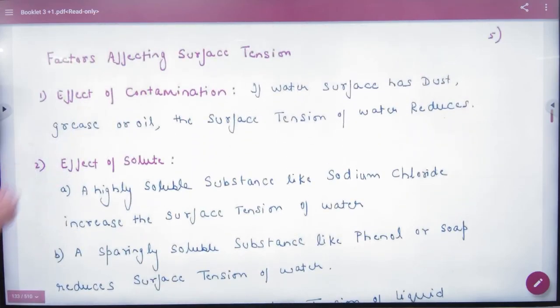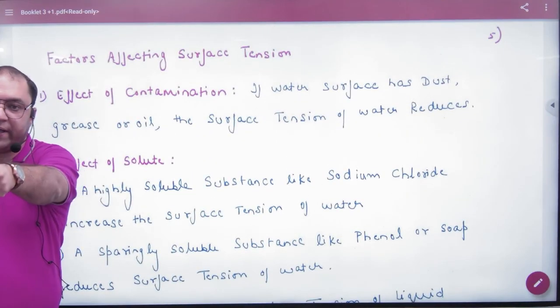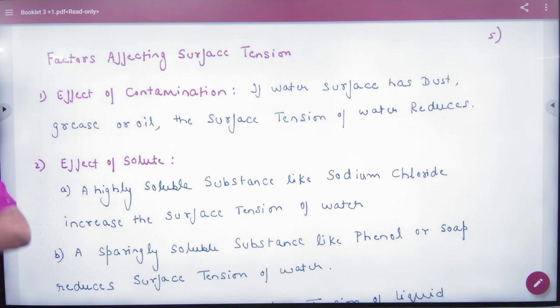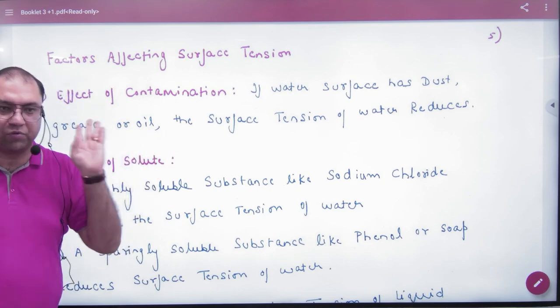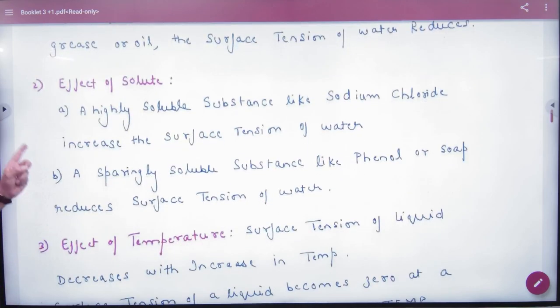Factors affecting surface tension. First factor: contamination. If you have contaminated water surface with dust, grease, or oil, the surface tension of water is reduced from these things.